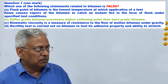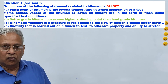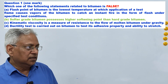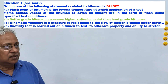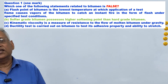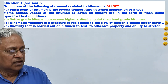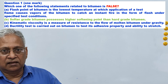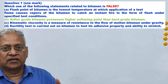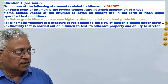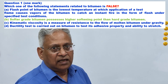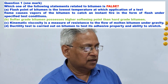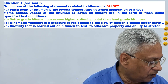The third statement — kinematic viscosity is a measure of resistance to flow — is true by definition. The fourth statement — ductility test is carried out on bitumen to test its adhesive property, that is ability to stretch — is also true, as bitumen is ductile if it is stretchable. Therefore the answer is B: softer grade bitumen possesses higher softening point than hard grade bitumen — this statement is false.